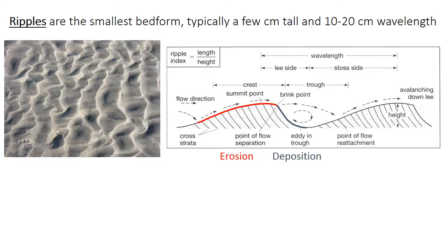Ripples are a very common type of bedform in unidirectional flow. They're quite small — on the order of a few centimeters tall, with wavelengths or spacing around 10 to 20 centimeters. In cross-section, they have a very gentle upstream slope called the stoss side, and a fairly steep slope on the downstream face called the lee side. Viewed from above, the crest can be fairly straight, sinuous or wavy, or curved into an arc shape. The picture on the left shows some somewhat sinuous-crested ripples.